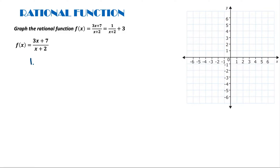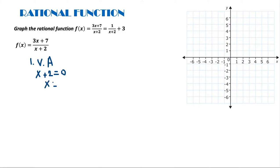First, let me find some key features. Let me find the vertical asymptote. The vertical asymptote is found by taking the denominator x plus 2 and equating it with 0. When we solve x plus 2 equals 0, x is going to be equal to negative 2. So this is the vertical asymptote.